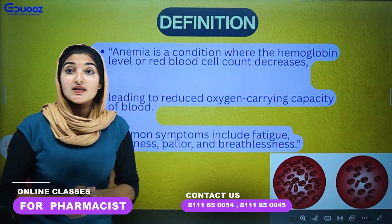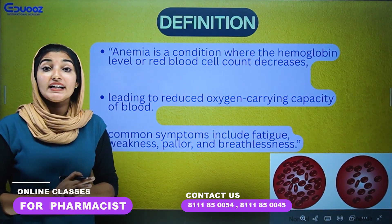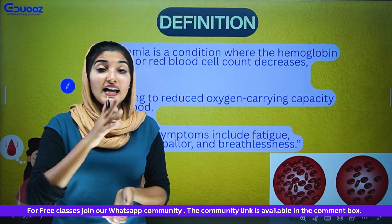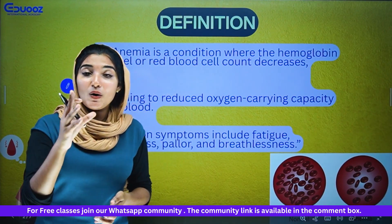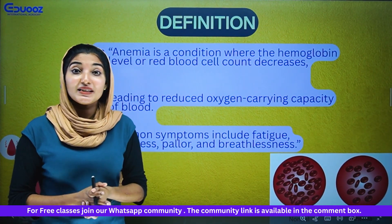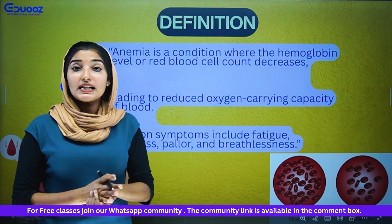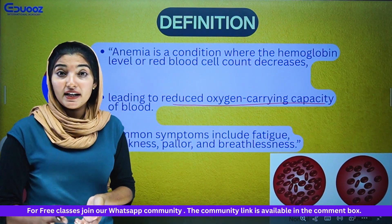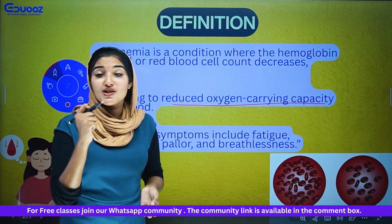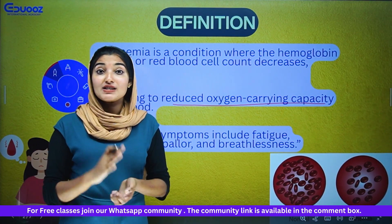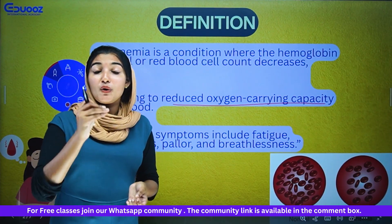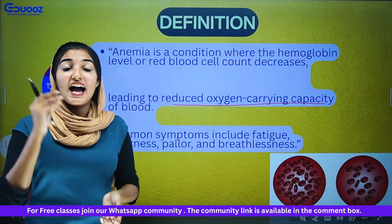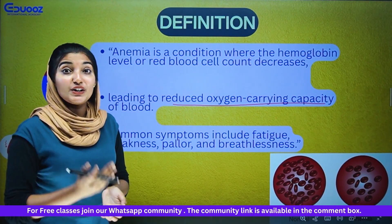Anemia is a condition where the hemoglobin level or red blood cell count decreases. In our blood, RBC cell counts as a protein called hemoglobin. When hemoglobin decreases, it is called anemia. It leads to reduced oxygen carrying capacity of the blood.